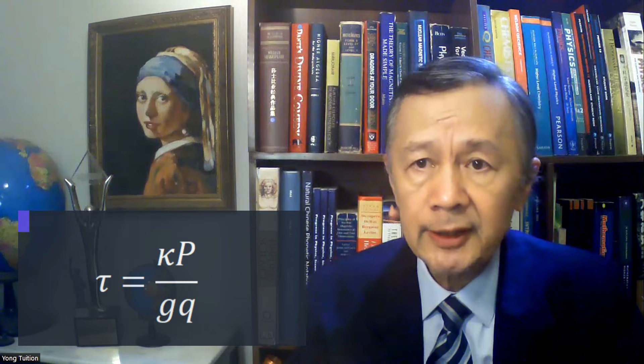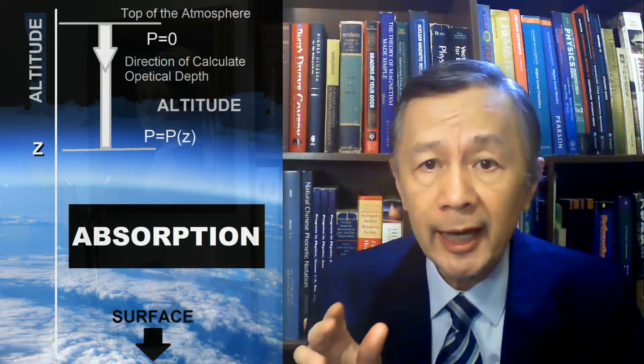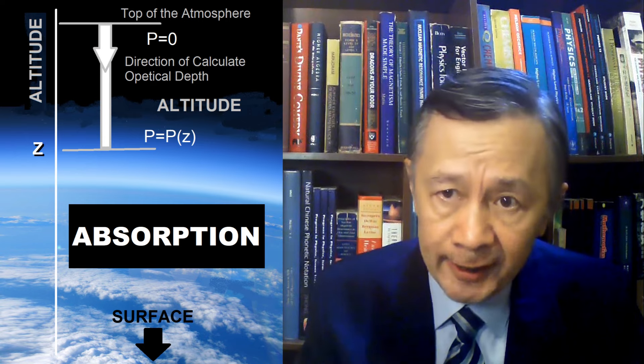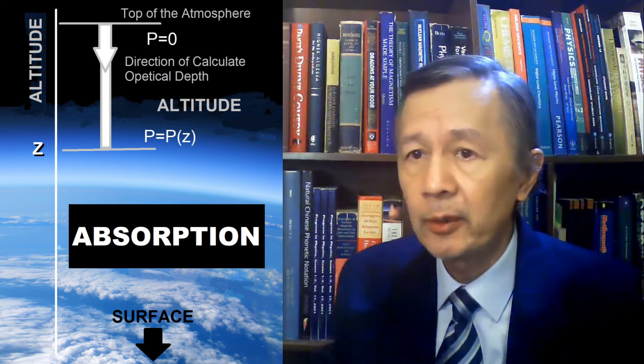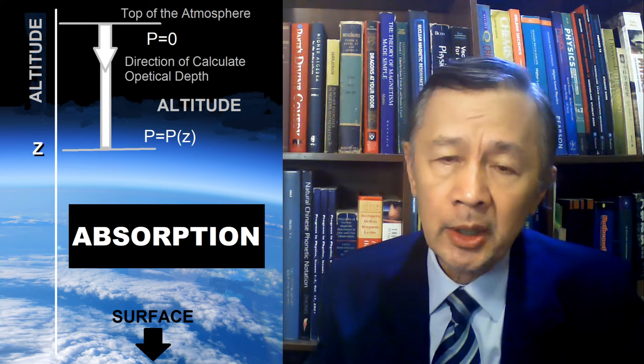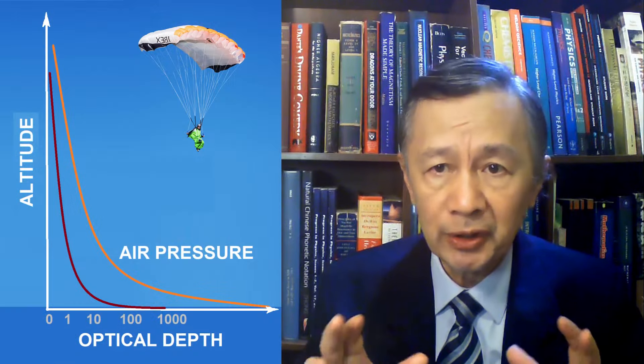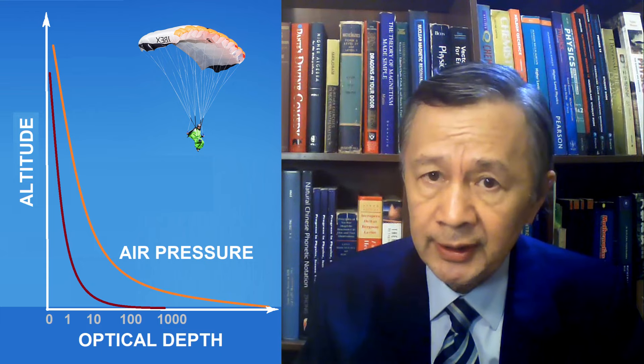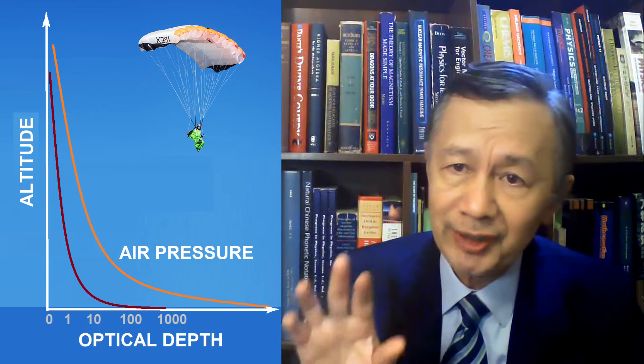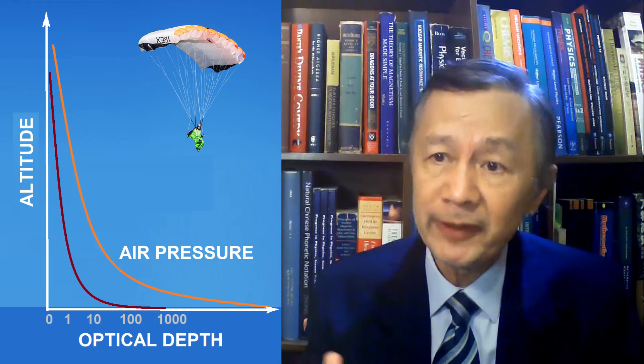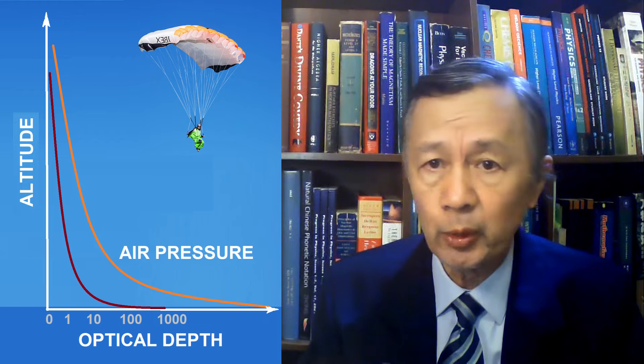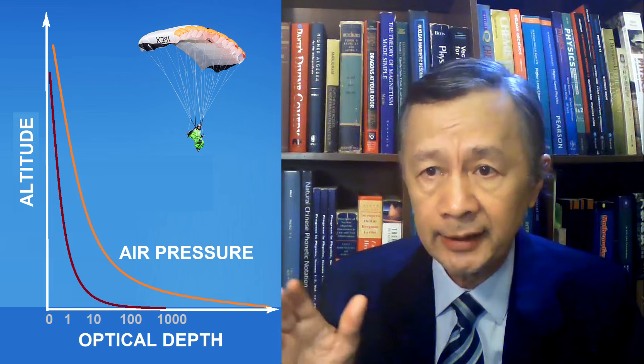Before we go further, it is necessary to note that optical depth is accounted downward from the top of the atmosphere, where the air pressure can be approximated at zero, as shown in this diagram. To understand the formula for optical depth, imagine you jump out from a high altitude balloon. As your altitude decreases, the air pressure will increase until you land on the surface. Obviously, optical depth will reach to its maximum value too, at the landing site.